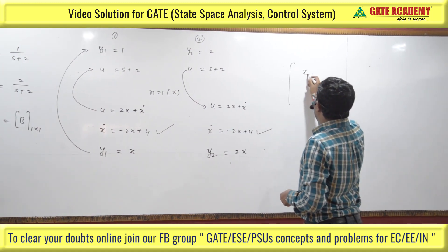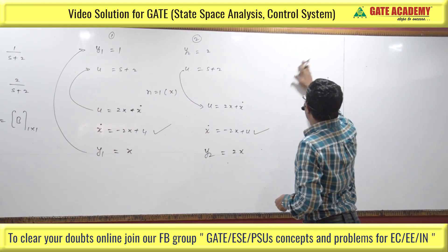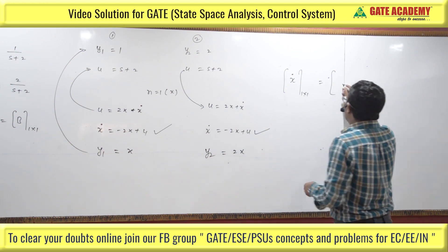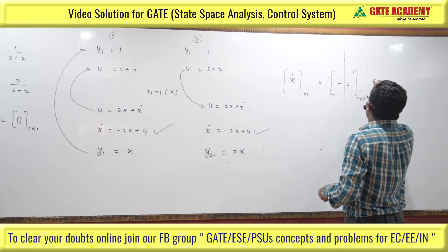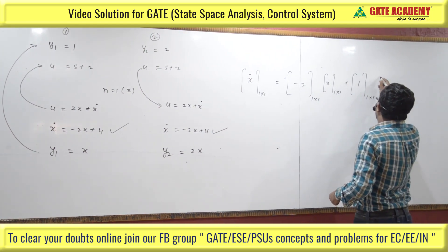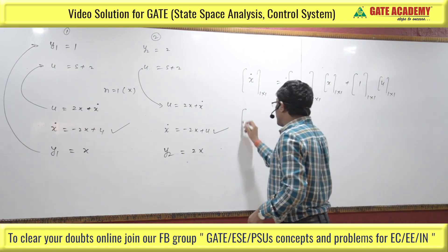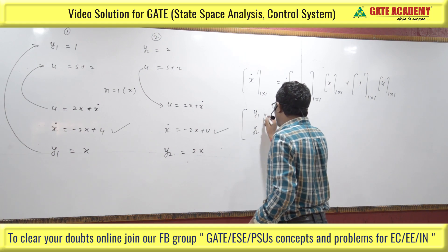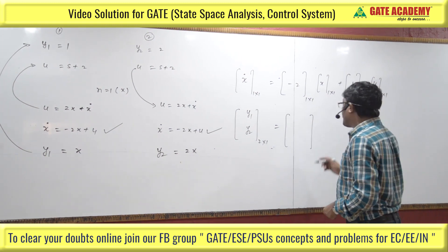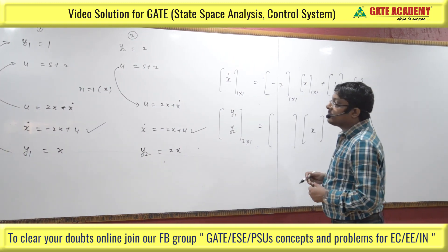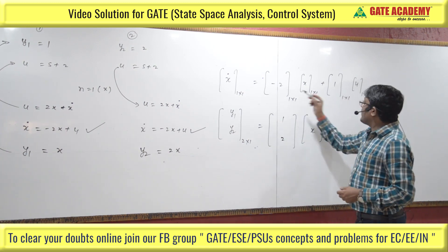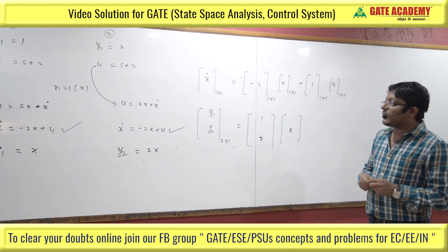Writing the complete state variable representation: x-dot = [-2] · x + [1] · u (1×1 system matrix, 1×1 B matrix). The output vector Y is 2×1: y1 = 1·x and y2 = 2·x, giving C matrix = [1; 2] (2×1). So A matrix, B matrix, and C matrix are all determined. The B matrix is 1×1 and the system matrix is 1×1.